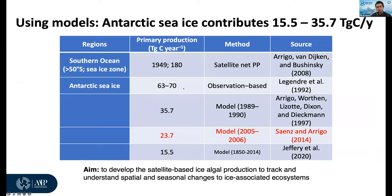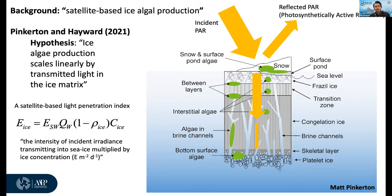The large range of sea ice algal production estimated by models motivates the question: can we develop a satellite-based product to help evaluate this range and variability? This motivated key collaborators Pinkerton and Hayward to develop a simple model — a satellite-based ice algal product — assuming sea ice algal growth is limited by light. If we can estimate the light transmitted into the sea ice, we can assume primary production is proportional to that amount of light.